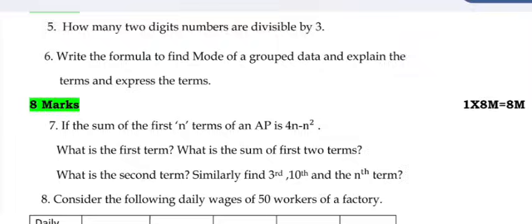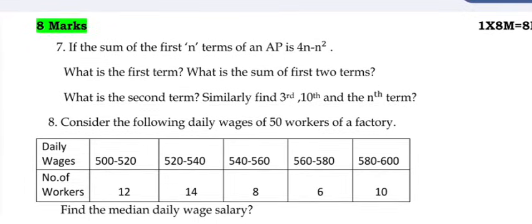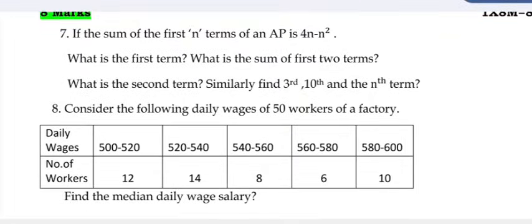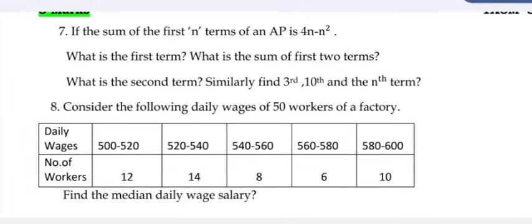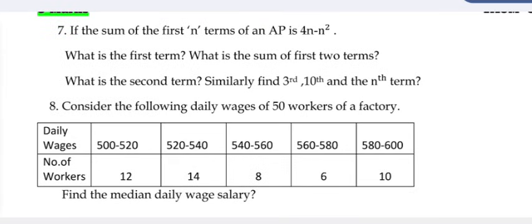Write the formula to find mode of a grouped data and explain the terms. If the sum of first n terms of an AP is 4n minus n square, what is the first term, what is the sum of first two terms, what is the second term? Similarly, find third, 10th, and nth term.